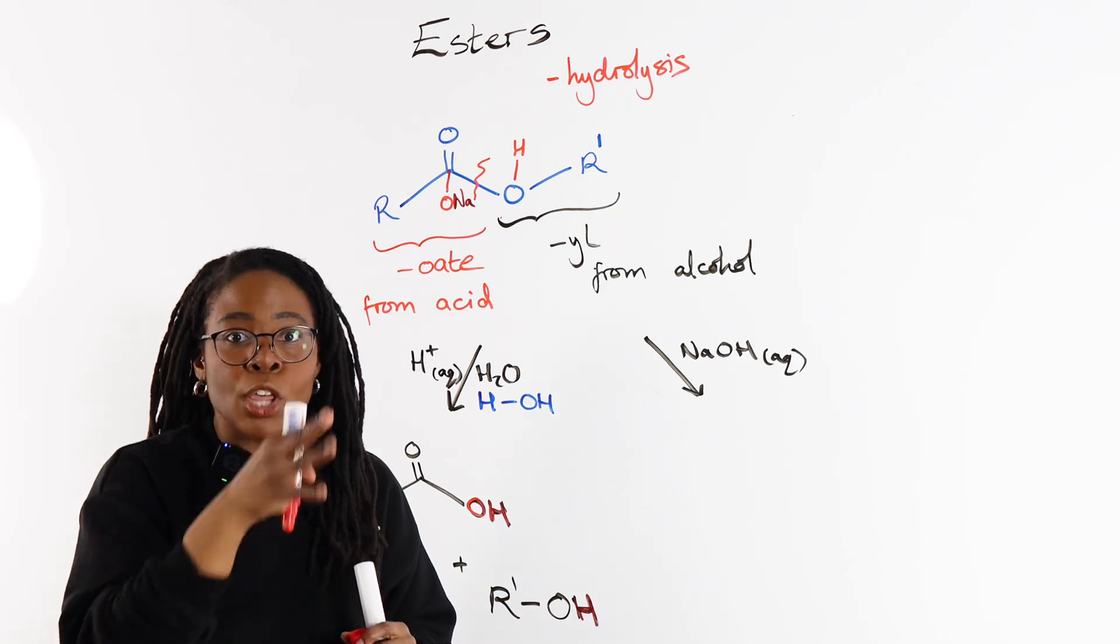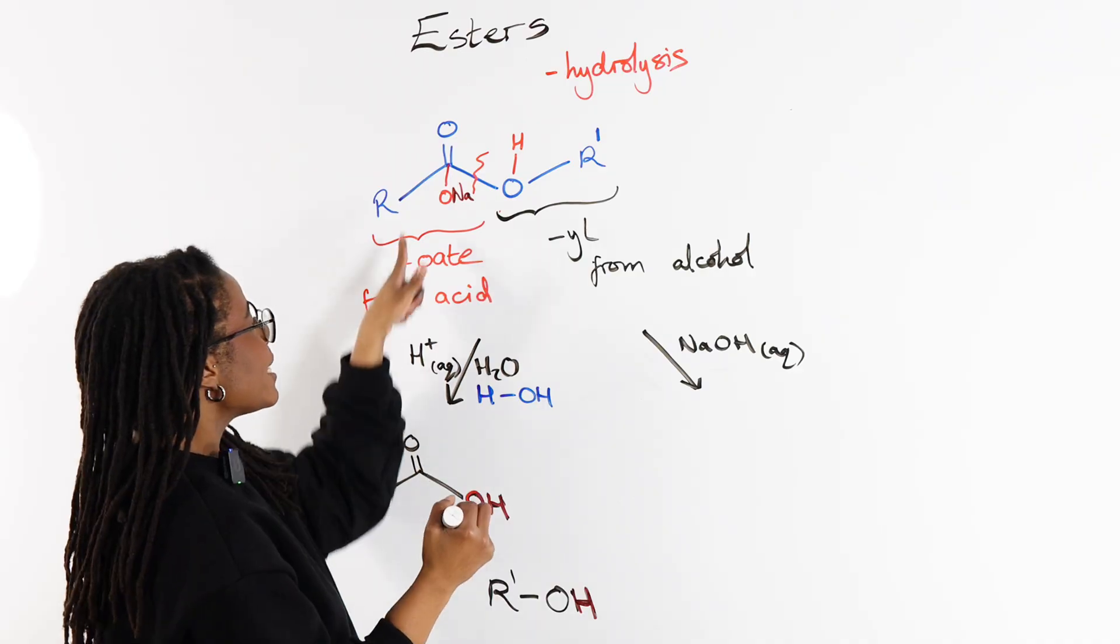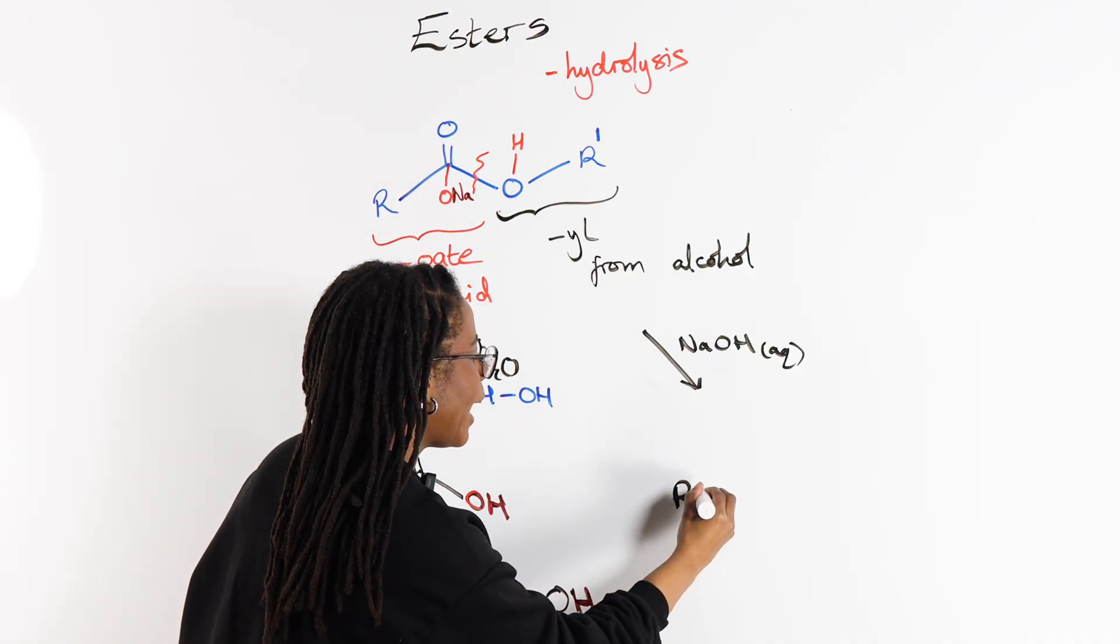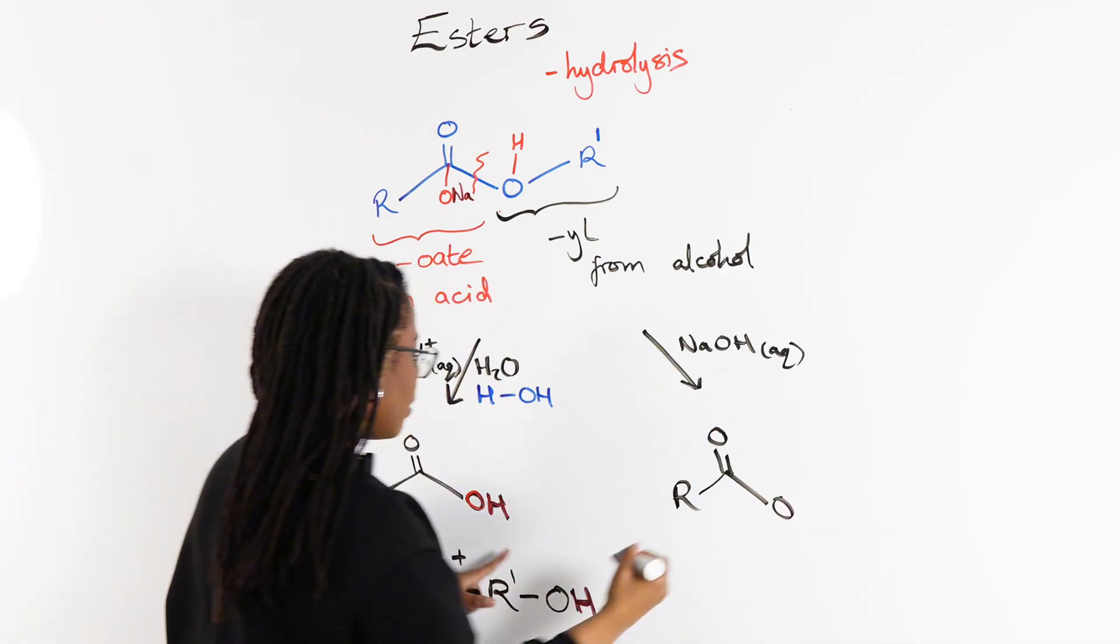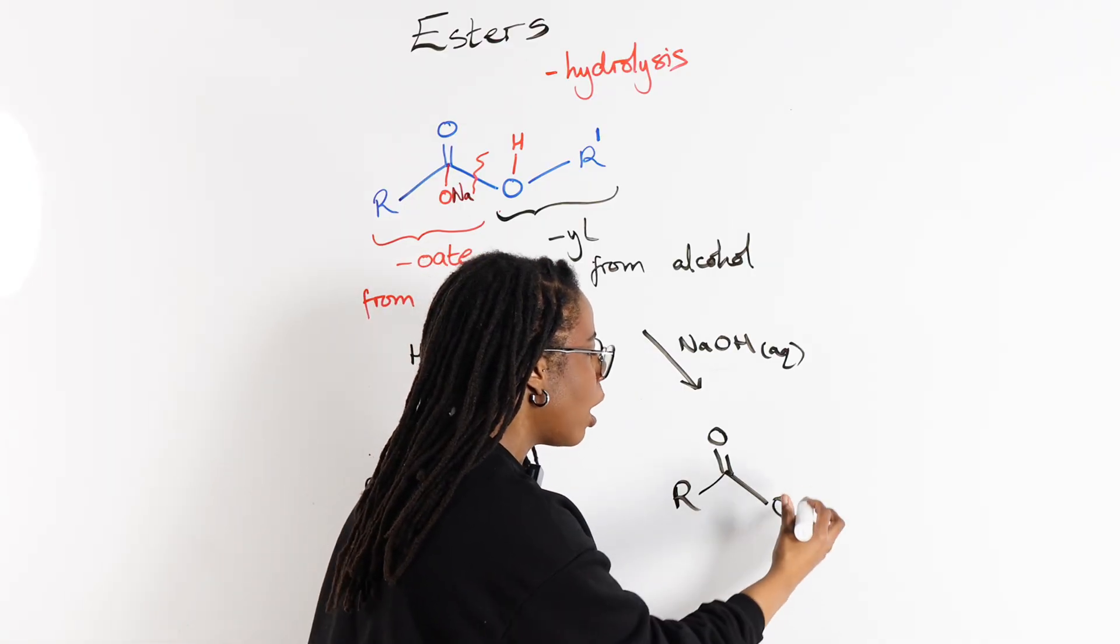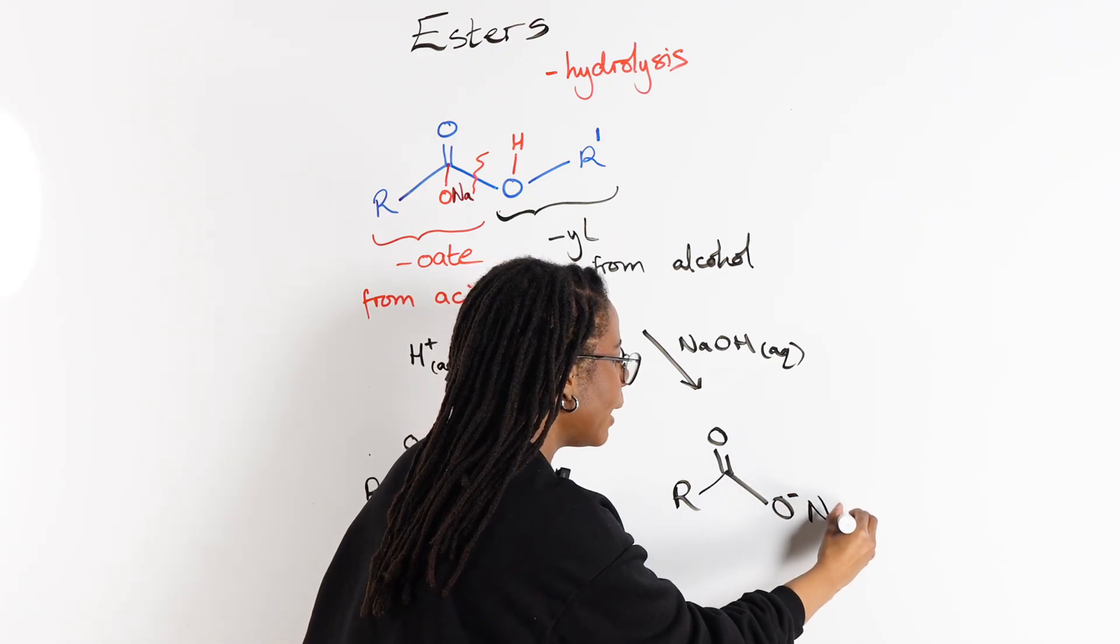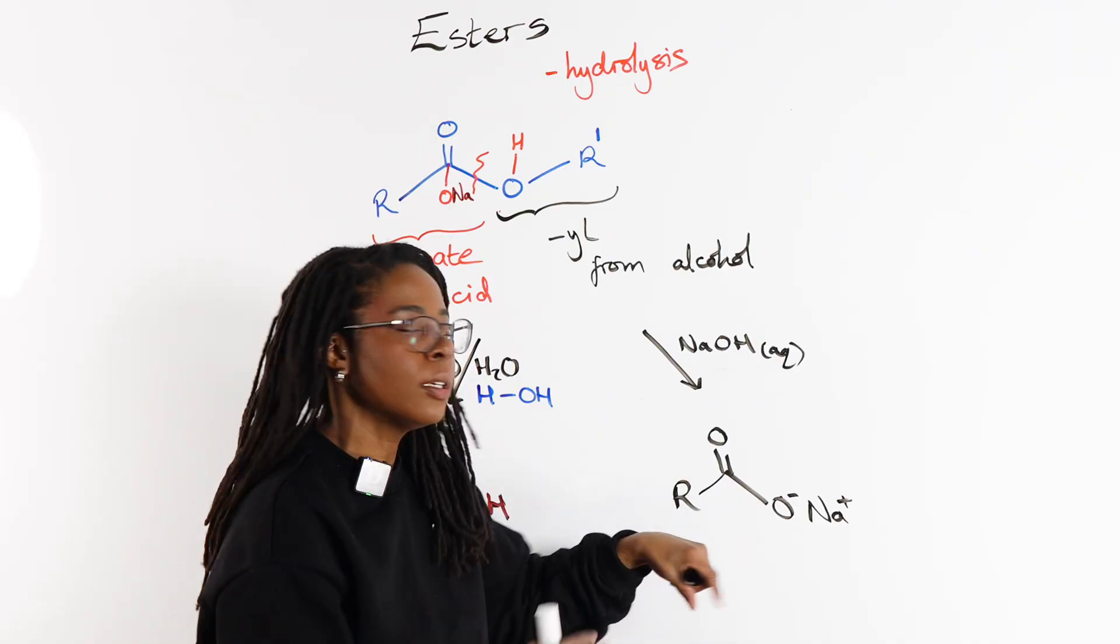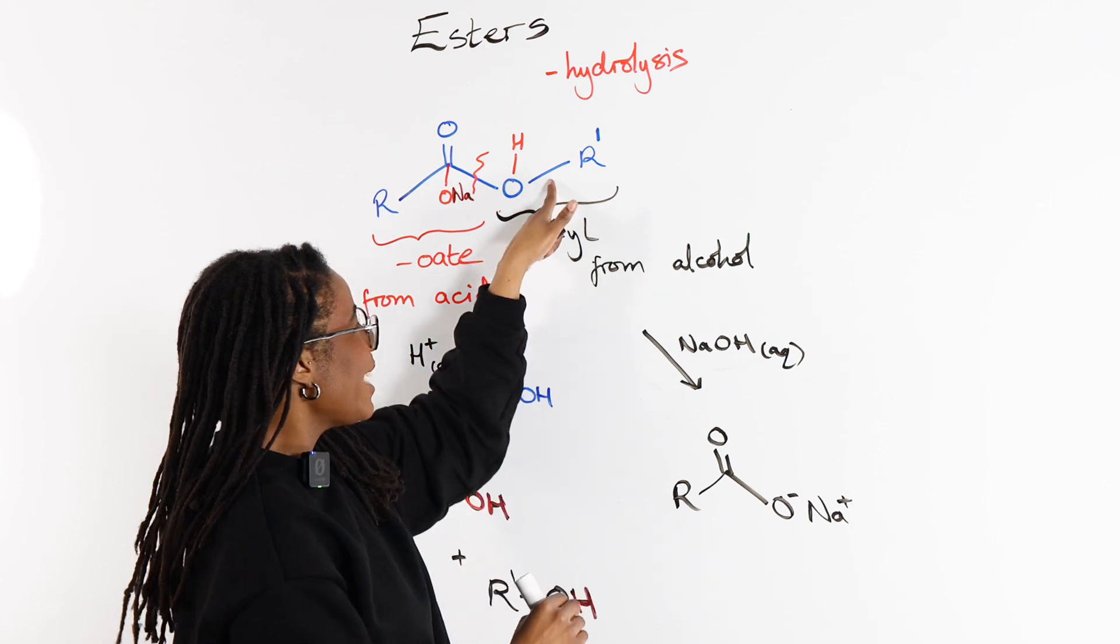So what we're going to do instead is we are going to give an ONa to the acid, to the O8 part. So when it comes to our final products, instead of having a carboxylic acid, we are going to end up with a carboxylate salt because we're not going to have this acidic proton.